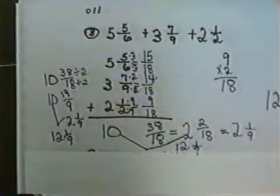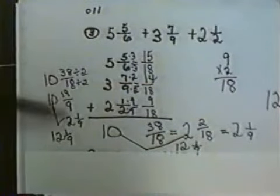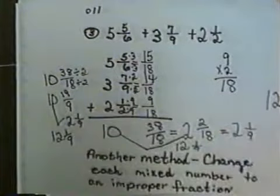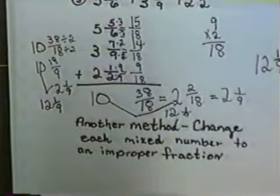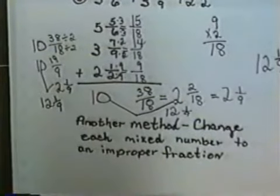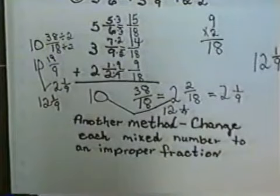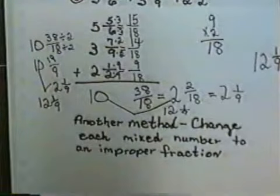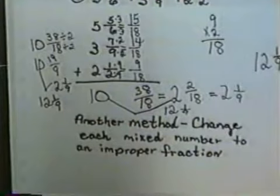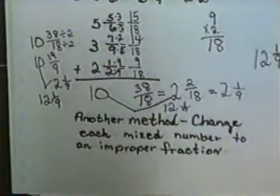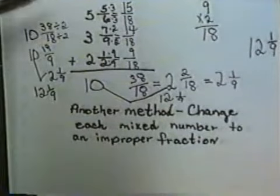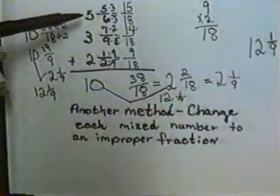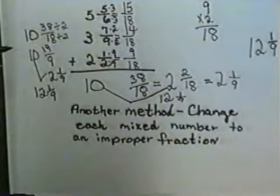Now, there's also another method for working a problem like this. If you don't like the carrying that we're doing, the other method is to change each mixed number to an improper fraction before you start. Now, the only problem with that is that our numbers get real big, but I want to show you that you could do that. If we made the 5 and 5 sixths an improper fraction, we'd say 6 times 5 is 30 plus 5 would be 35 sixths.